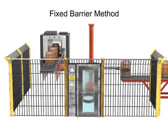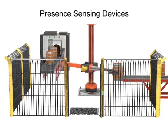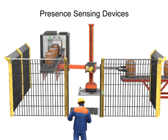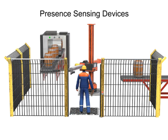Another method of protecting the robot's work envelope employs the use of presence sensing devices. These devices detect the entry of a person into a hazardous area and slow or stop the robot. Pressure mats are typically installed just outside the robot's work envelope. When a person steps on the mat, a signal is sent to the robot to stop or slow work.